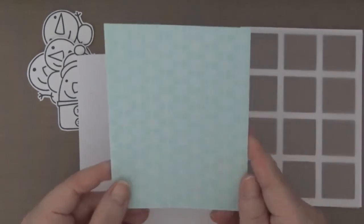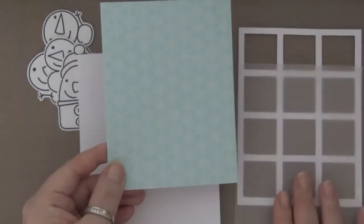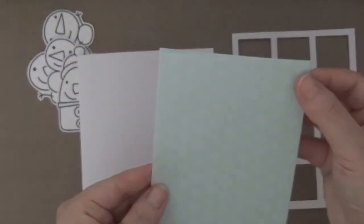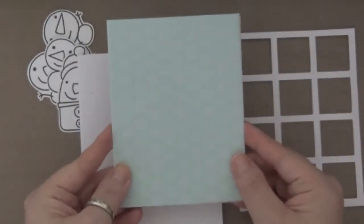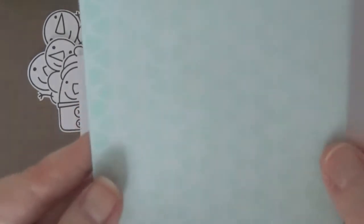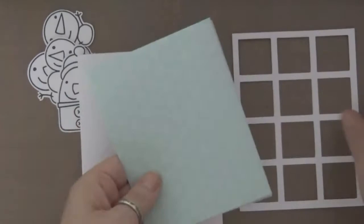This is another Stampin' Up paper from last year and I wanted to mute it down to make it look like snow in the back, so that's why I have the vellum.